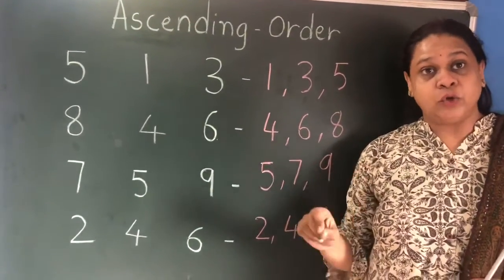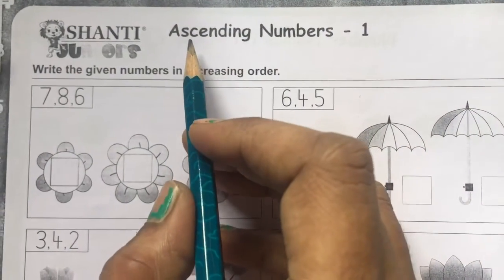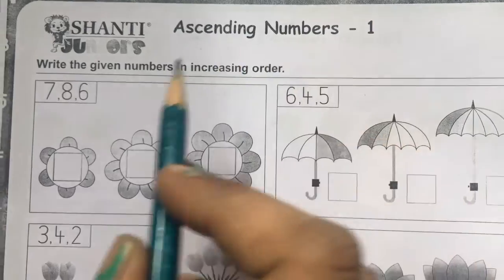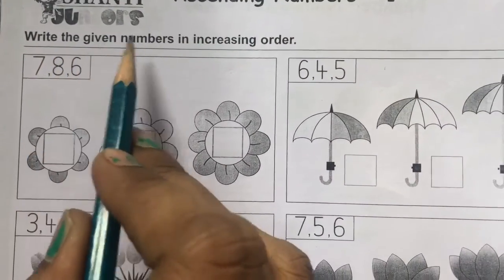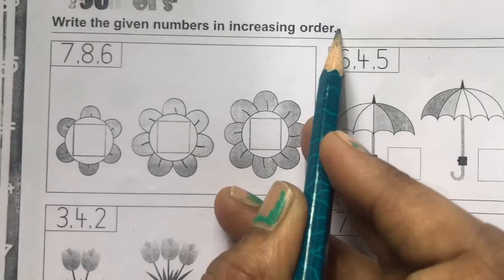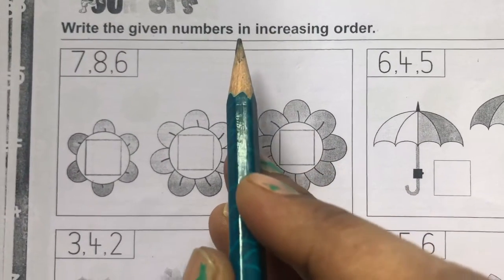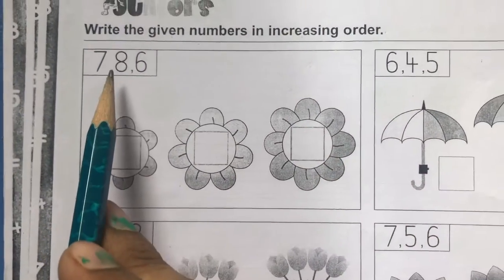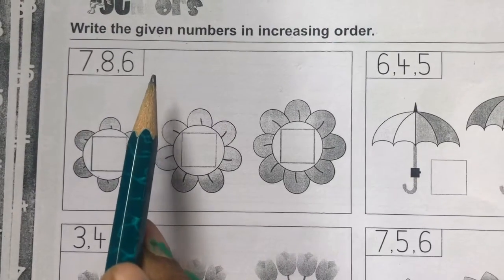You have to write this type of numbers in your notebook and practice. Now we are going to revise ascending order again. Write the given numbers in increasing order — we have to arrange the numbers from smaller to bigger.